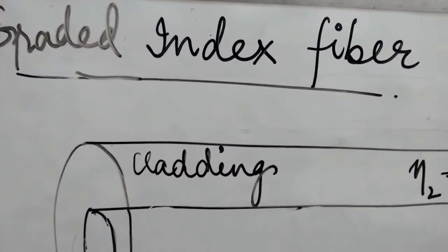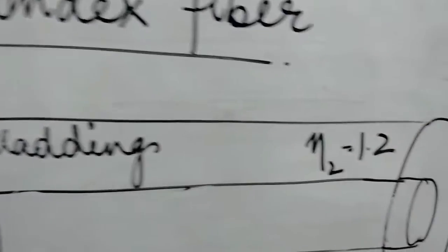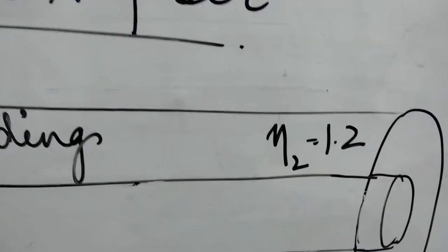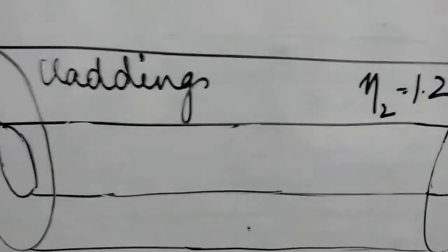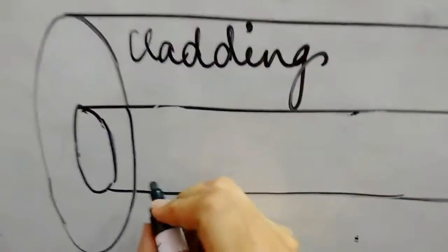Now, in the graded index fiber, the cladding part is fixed. It's constant. But the core part, this is the core part, the inner part is the core.